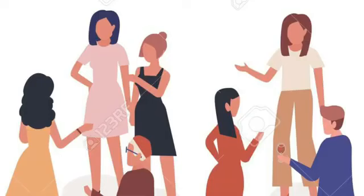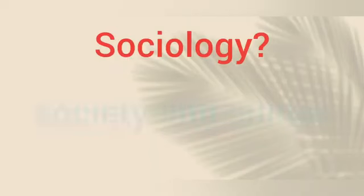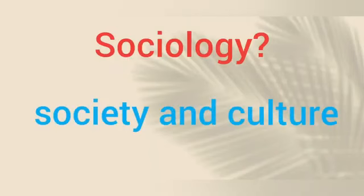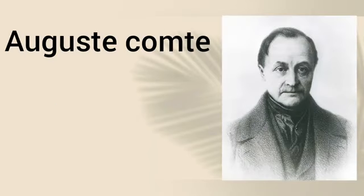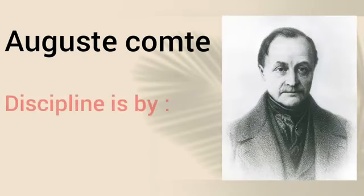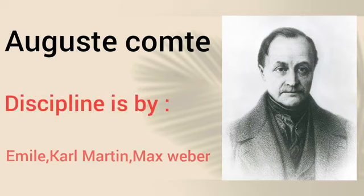A simple definition is that Sociology is the study of society and culture. Although the term Sociology was first used by the French social philosopher Auguste Comte, the discipline was more firmly established by such theorists as Emile Durkheim, Karl Marx and Max Weber.